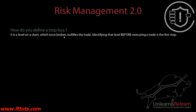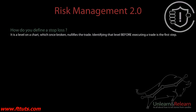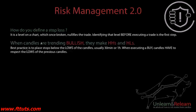A stop loss is a level on the chart which, once broken, nullifies the trade. Identifying that before executing a trade is the first step. This means that whenever you're trying to take a trade, you're making sure you know where your stop loss is going to be. You're already identifying your stop loss first — that's the first step before you take a trade.